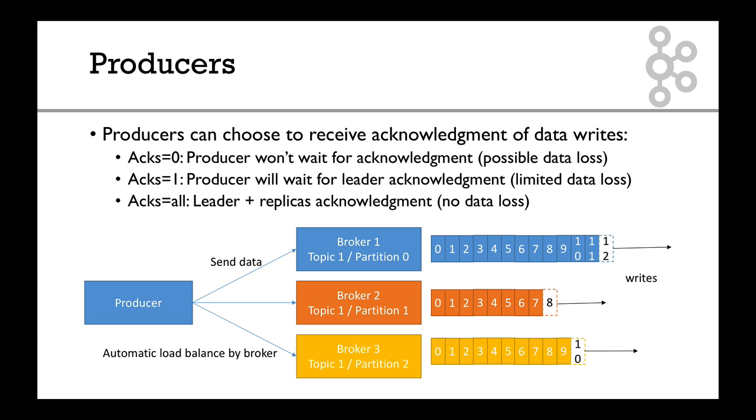Acks=1 is that the producer will wait for leader acknowledgments. That means that you send your data and the leader says, hey, I got it. And cool, you're done. So there's a bit of wait here, still very high performance, to be honest. And there's limited data loss because at least you know that one broker, the leader has your data, but there is no guarantee that the replicas have it.